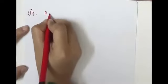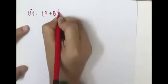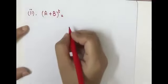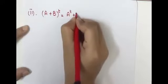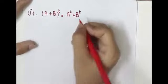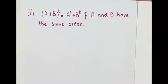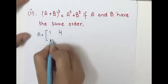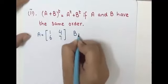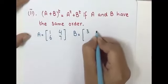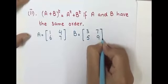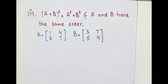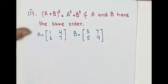Property 2: (A+B)^T = A^T + B^T, provided A and B have the same order. We will take an example with 2×2 matrices. Let A = [1, 4; 6, 7] and B = [3, 7; 5, 9].